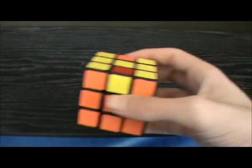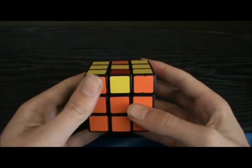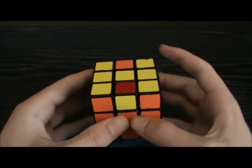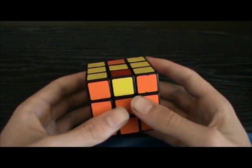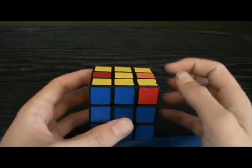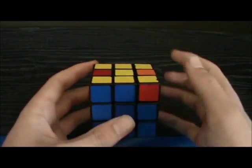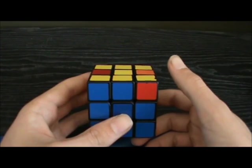If you have parity and you get something like this where the last target is BU, the setups can be complicated so you might just want to learn the T perm that flips the two edges.